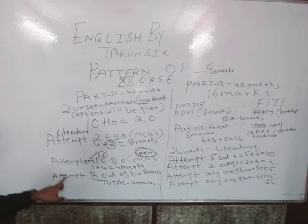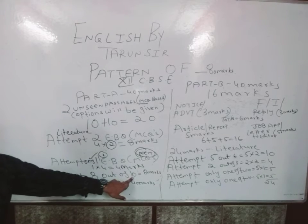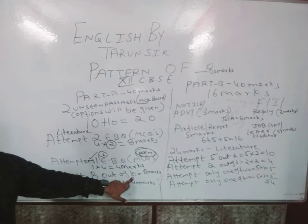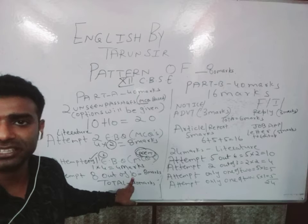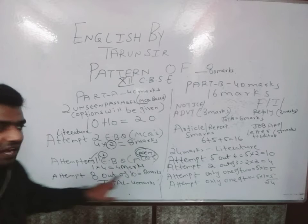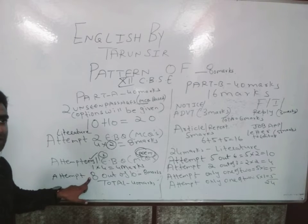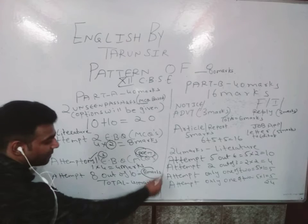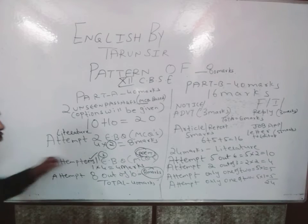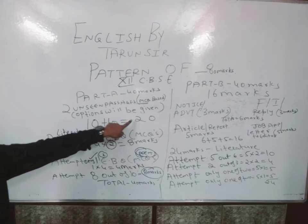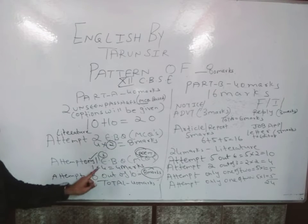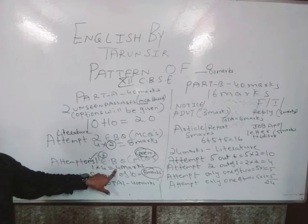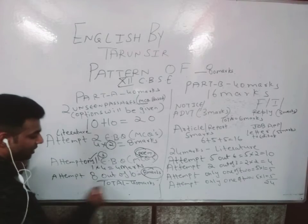Then you would be getting ten short answer questions. Remember, do not exceed the prescribed word limit. You will have to attempt eight questions at one mark each — that is eight marks. So calculating: 20 plus 8 is 28, plus 4, plus 4 is 36, plus 8 equals 40 marks. This is Part A.